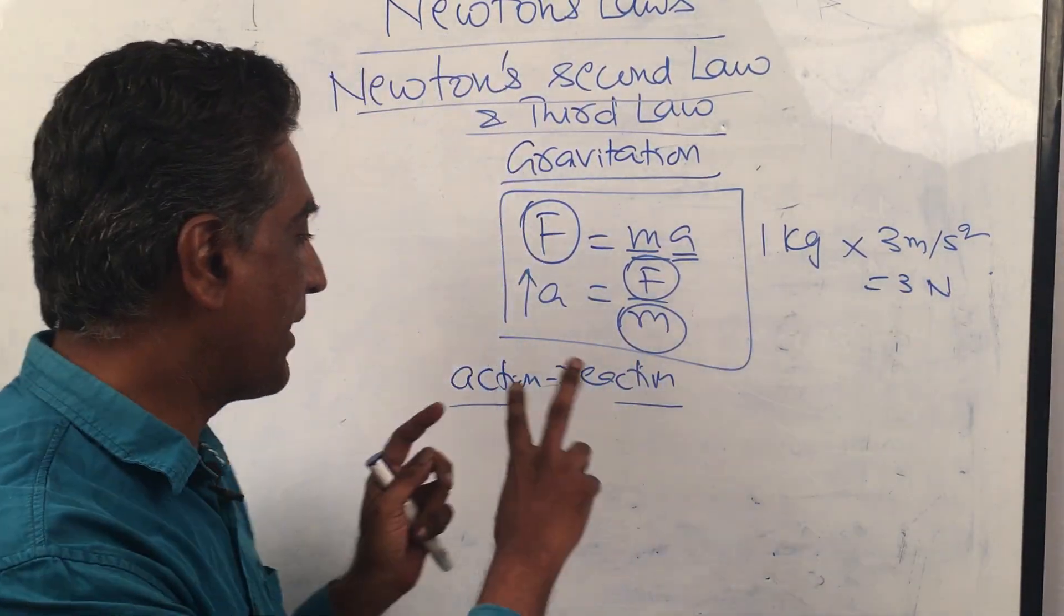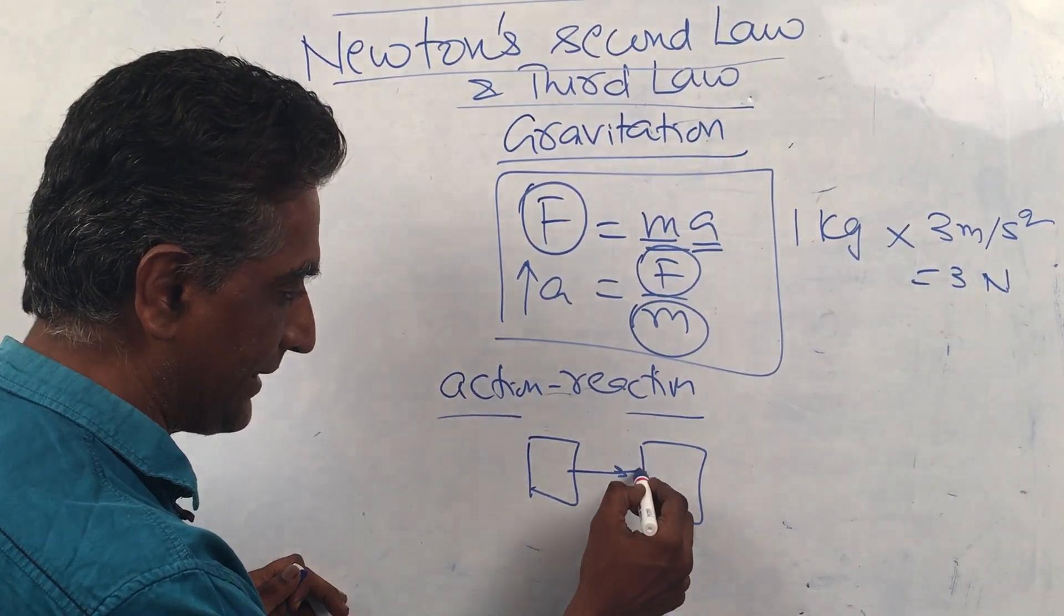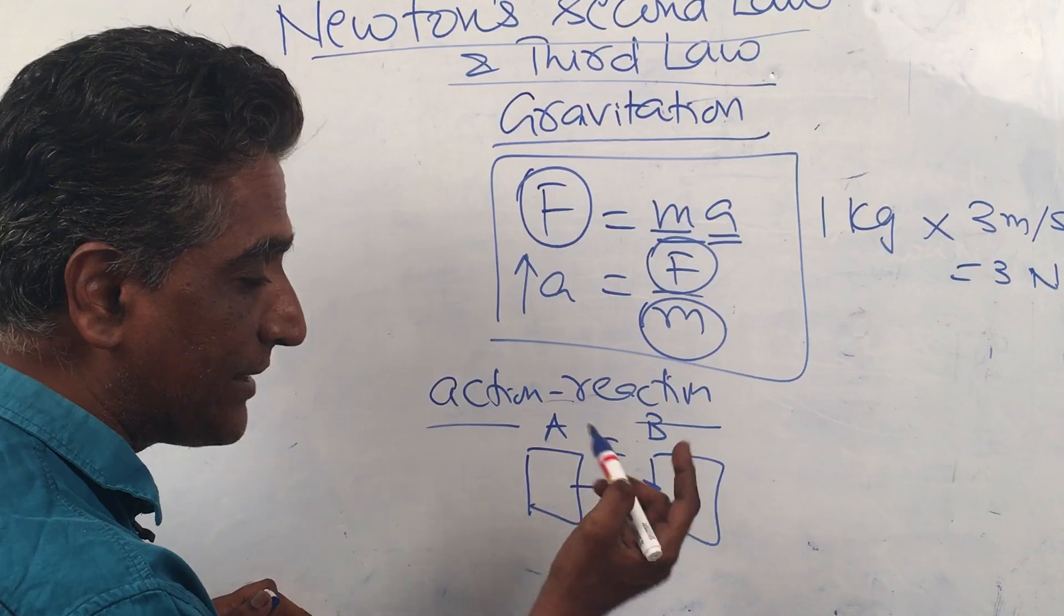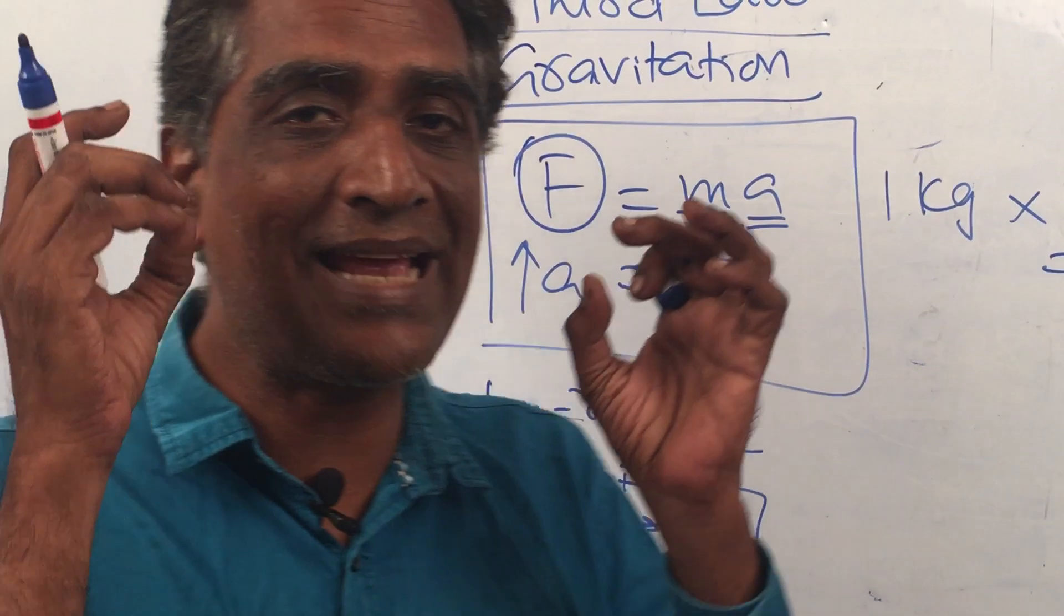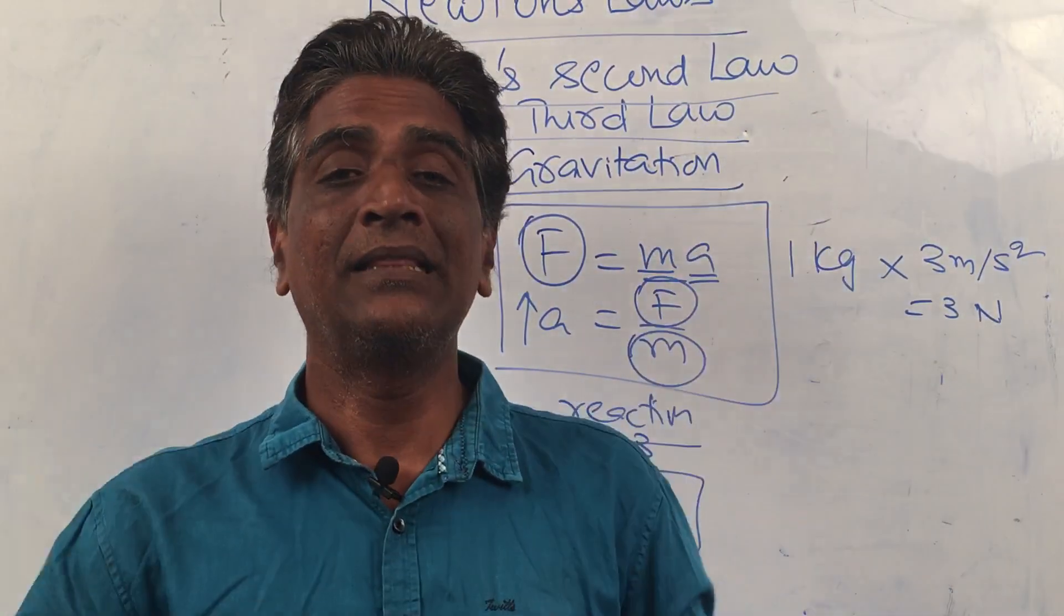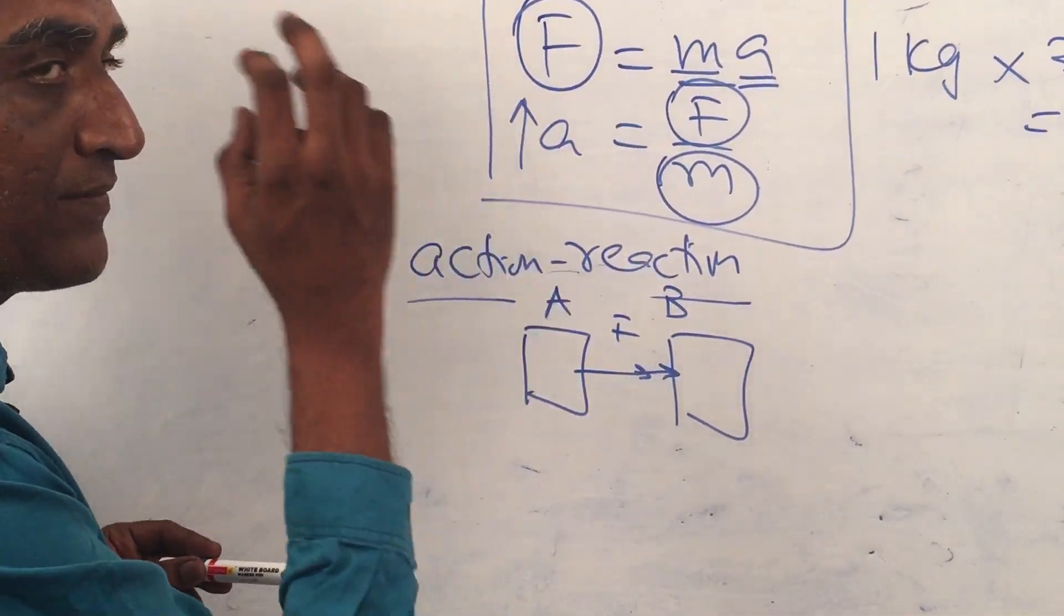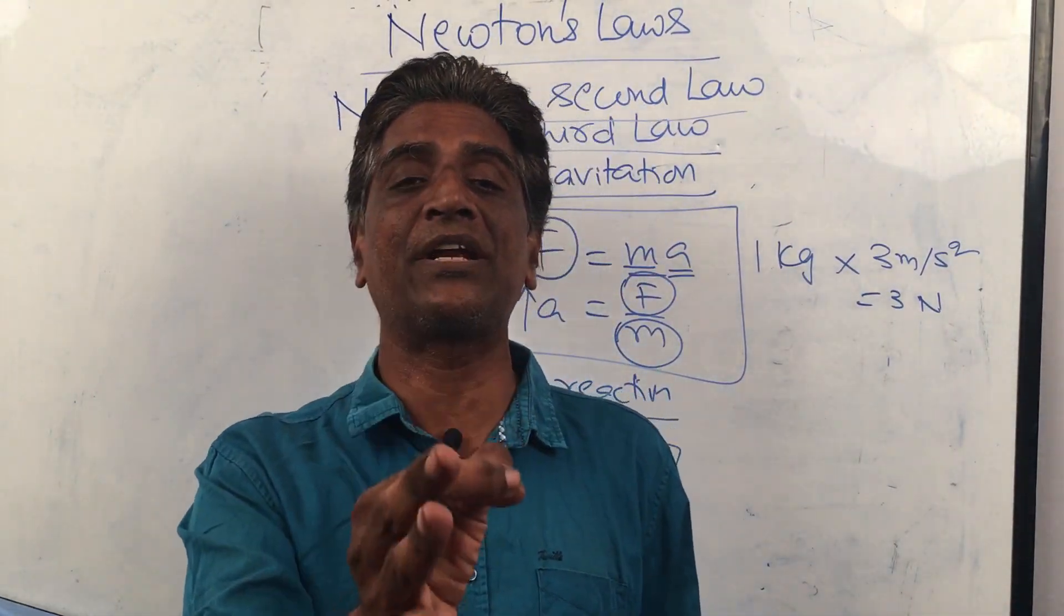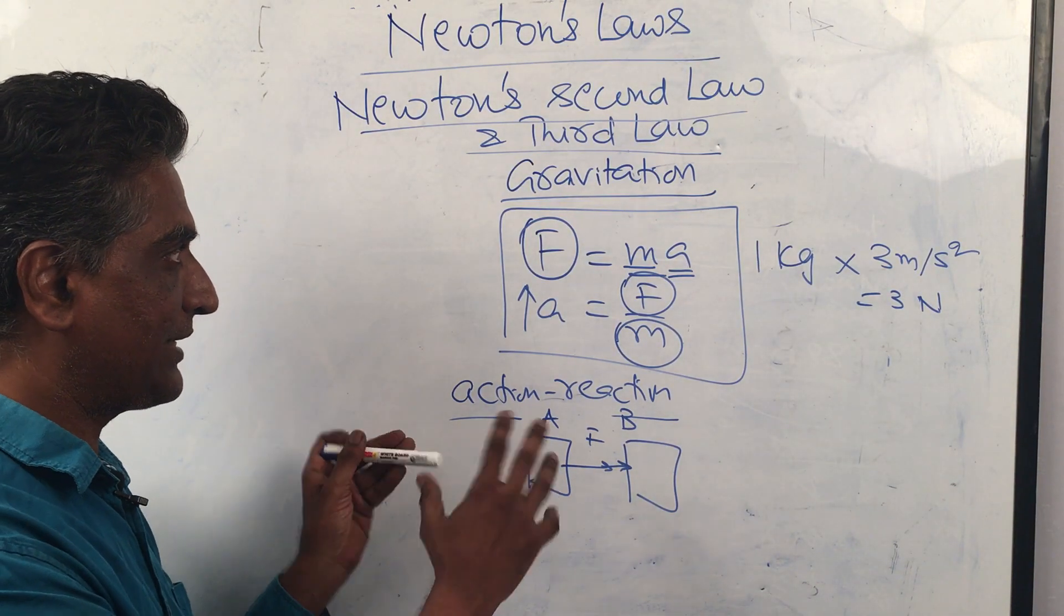When one body, if A gives a force of F to body B, body B at that moment—it is not that because of A giving B is giving—force comes at that same instant. We can say force comes in pairs. If A gives a force of F to body B, B gives an equal opposite force in the same straight line to body A.